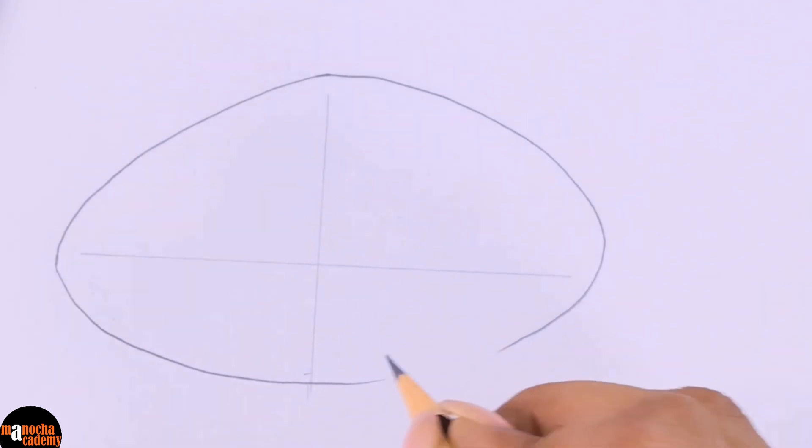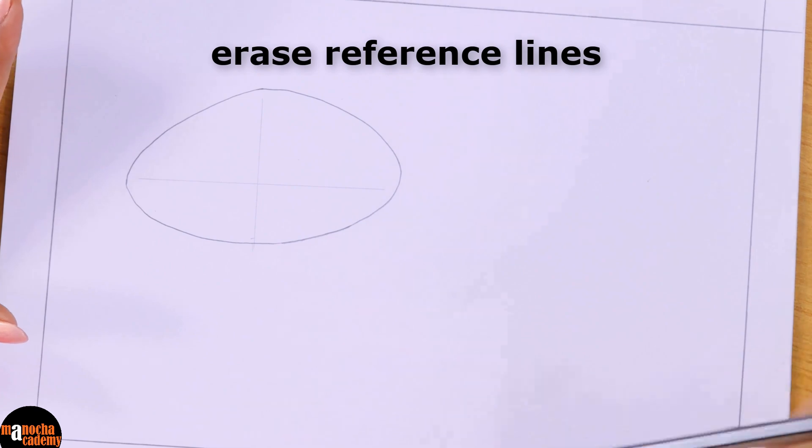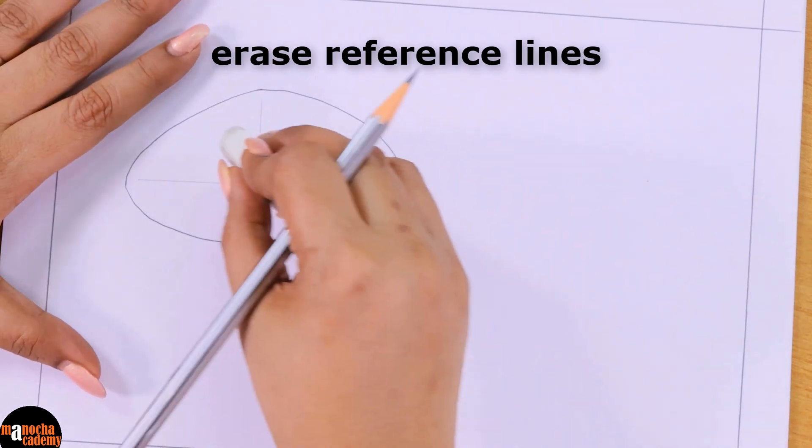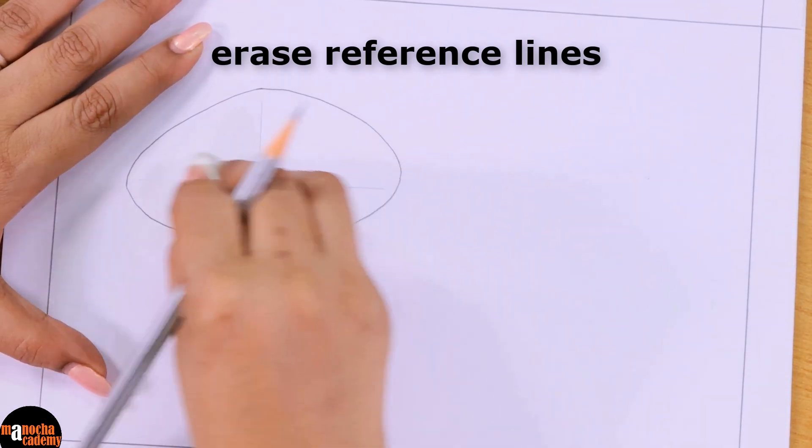This is the outer membrane of the chloroplast. You do not need the reference lines anymore once you have drawn the shape so you can erase them.